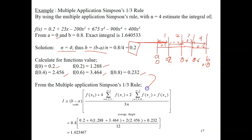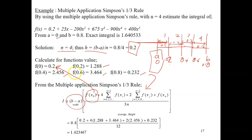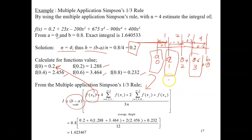It's time to substitute into the multiple application Simpson's one-third rule formula. The first term is straightforward — 0.8 minus 0 gives 0.8. For the first point, you substitute f(x₀). As mentioned in the previous video, the next term is for the odd points and the following term is for the even points. So the odd points are point number 1, point number 2, and point number 3.